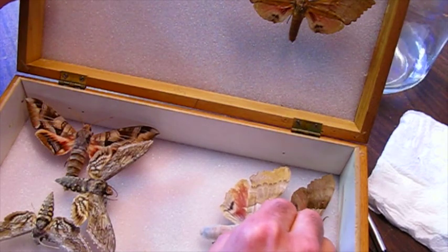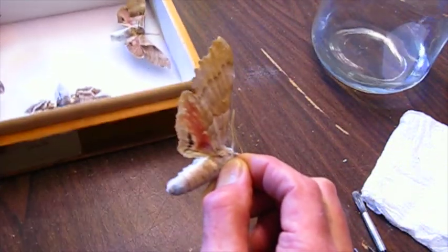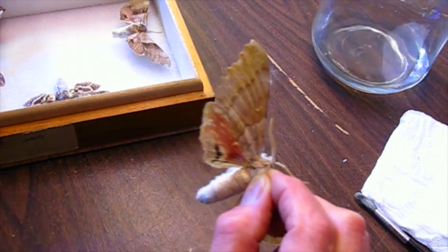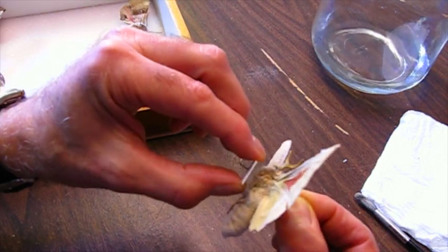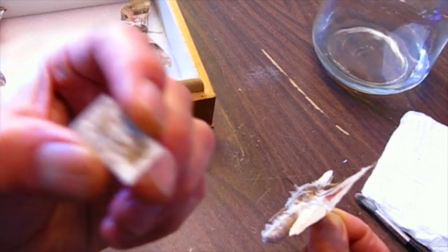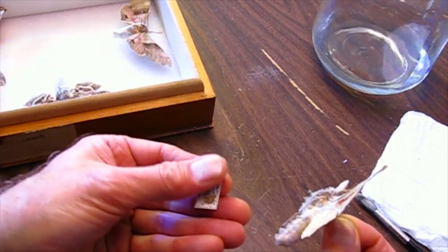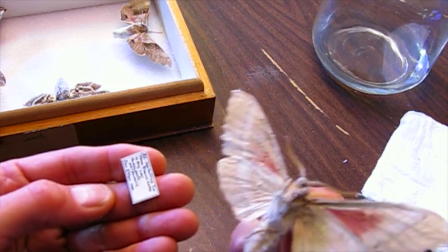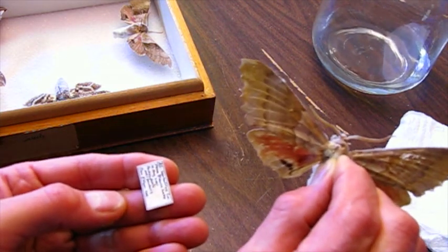We'll do another one, this is a big one. I'm going to pin the label to that so I don't lose track of it. This one is Pachysphinx occidentalis, from Arizona. This one's pretty moldy on the bottom as well as the top.